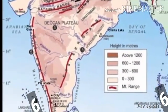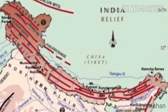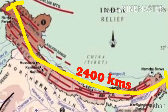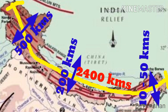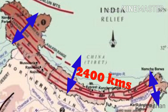The Himalayas run in the west-east direction over a distance of about 2,400 km in the form of an arch. Their width differs from 500 km in the western regions to 200 km in the central and eastern regions. It is broader in the western region and has altitudinal variations across regions. The Himalayas comprise three parallel ranges according to their height.